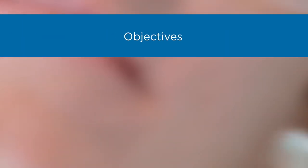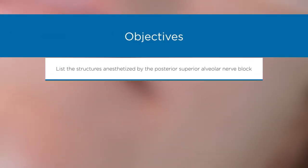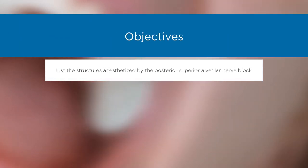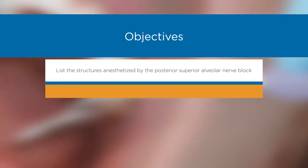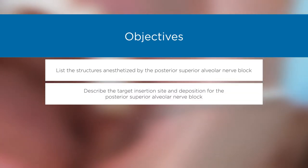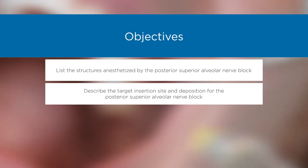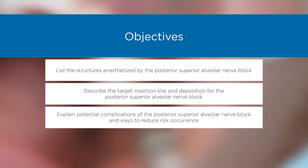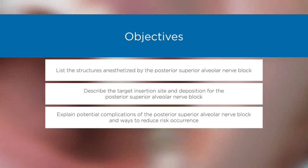Objectives: List the structures anesthetized by the posterior superior alveolar nerve block. Describe the target insertion site and deposition for the posterior superior alveolar nerve block. Explain potential complications of the posterior superior alveolar nerve block and ways to reduce risk of occurrence.